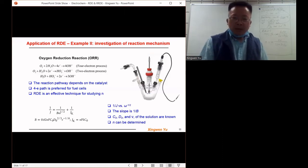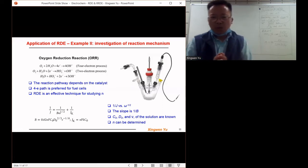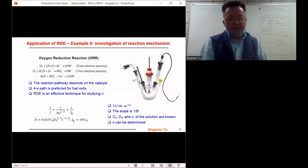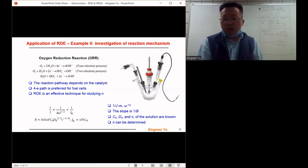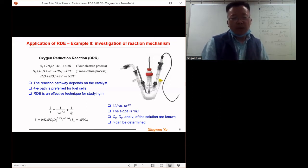We can use RDE to study the reaction mechanism to see if the reaction follows the four electron process or the two electron process. So the four electron process is always preferred for, for example, the fuel cells or the metal-air batteries.